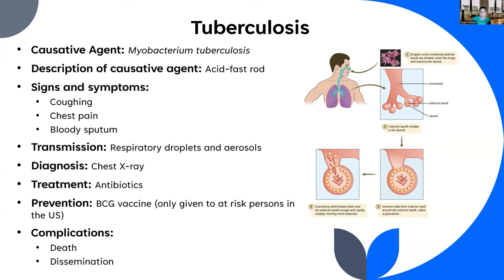We'll encounter Mycobacterium leprae another time — the cause of leprosy, another incredibly slowly progressing disease. Tuberculosis is in the same category. Starting in the late 18th century and into the 19th century, TB — also known as 'the consumption' — was a widespread killer. People would be sent to mountain retreats where the cool, fresh air was supposed to help, but there were no ventilators and no antibiotics. People would just slowly waste away over years and years.